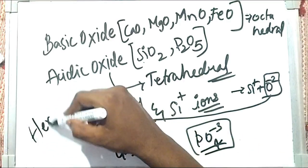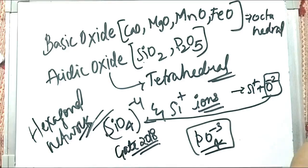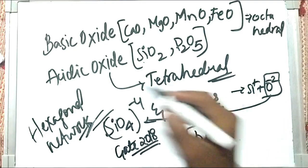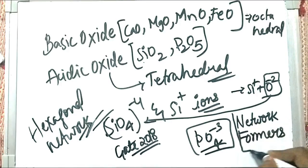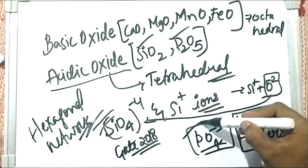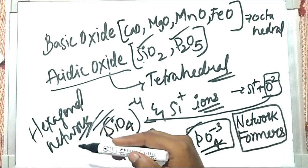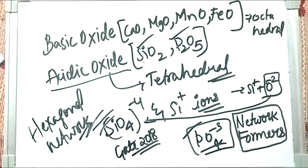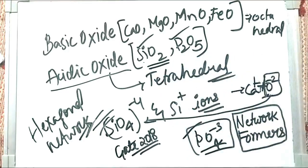These complex ions coming from acidic oxides tend to form a hexagonal network. Therefore these acidic oxides are known as network formers. Acidic oxides — SiO2 and P2O5 — form complex ions like SiO4 minus 4 and PO4 minus 3 which form a hexagonal network, and because of this hexagonal network formation they are called network formers. The acidic oxides can accept the oxygens that come from basic oxides to form these complex ions.